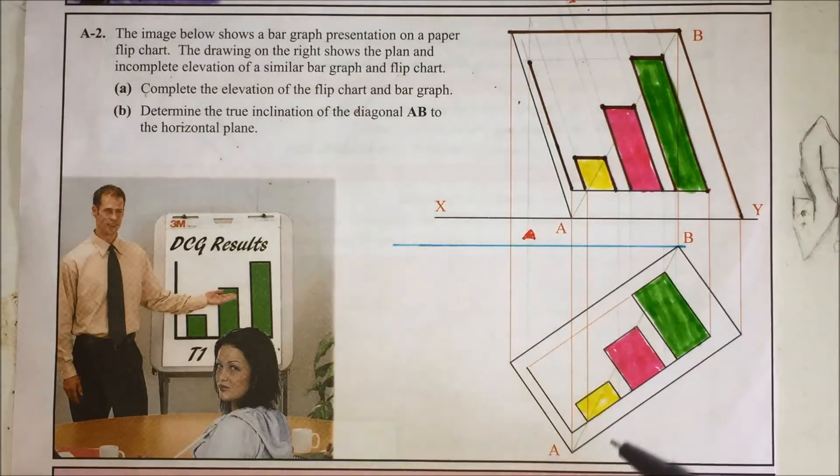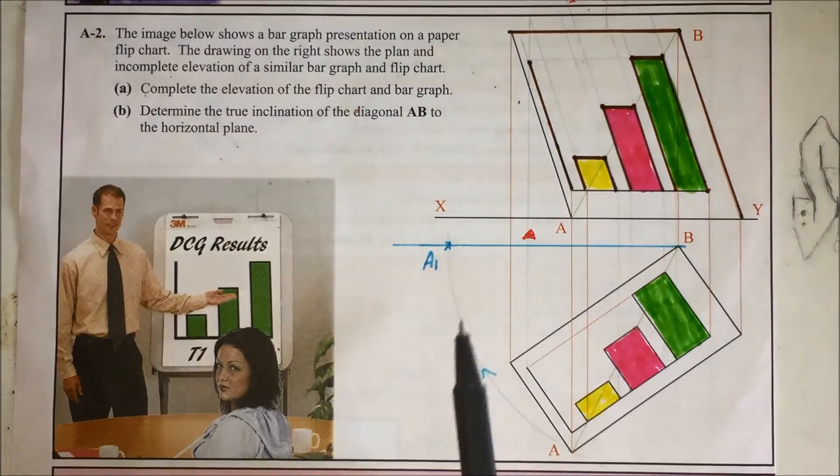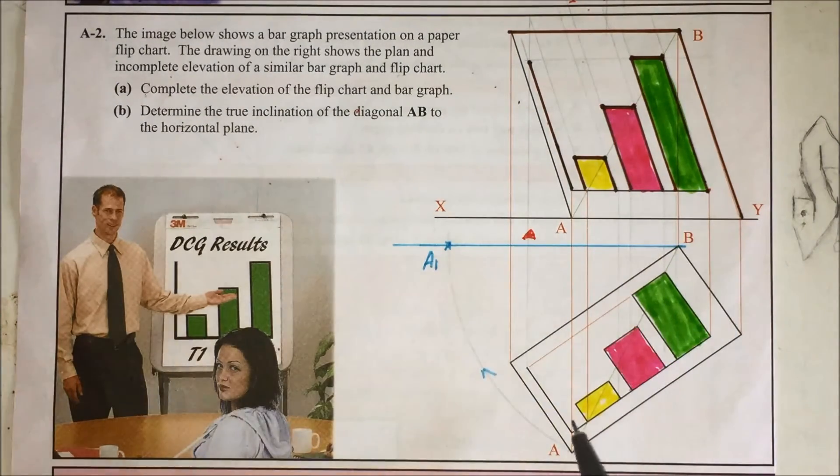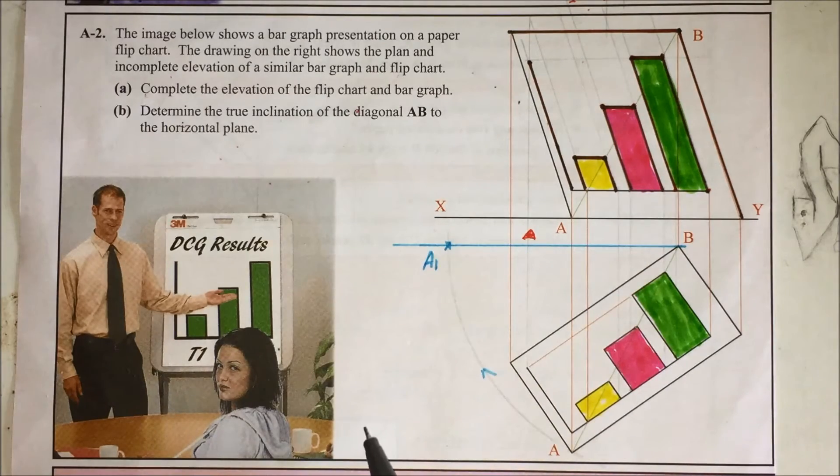Rotate A about point B up to that line. Now you could do it the other way around, you could rotate B around A if you wanted, but that's going over to the other drawing.